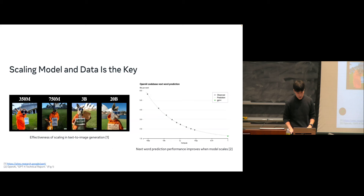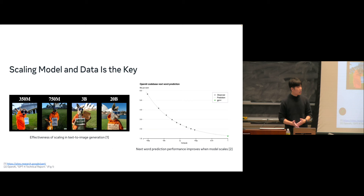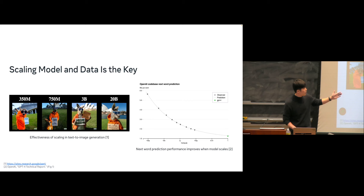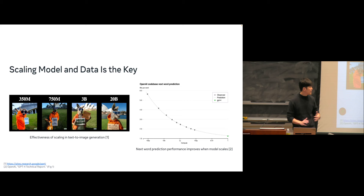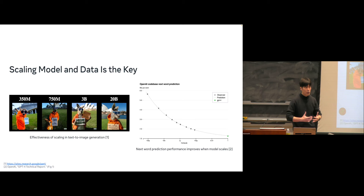One key to making all this work is scaling, which has two aspects: data and model size. Looking at the Parti model, they train on the same data but with different model parameters — from 350 million parameters up to 20 billion. On the smallest model, you see a kangaroo holding a sign but it doesn't look right. On the largest, you have a realistic kangaroo and a sign saying 'welcome friends' — scaling plays a role here.